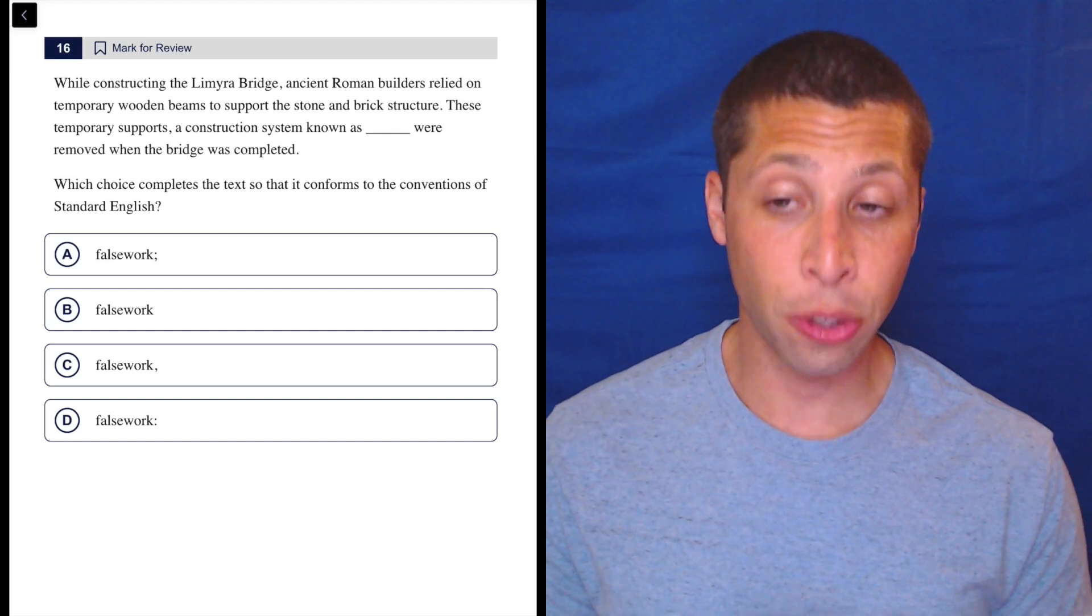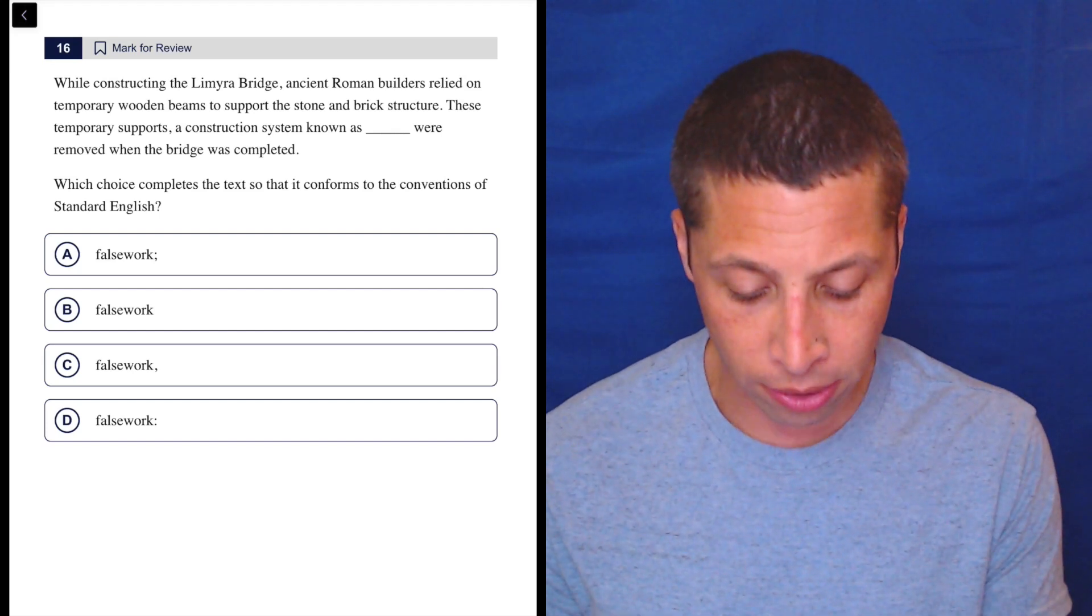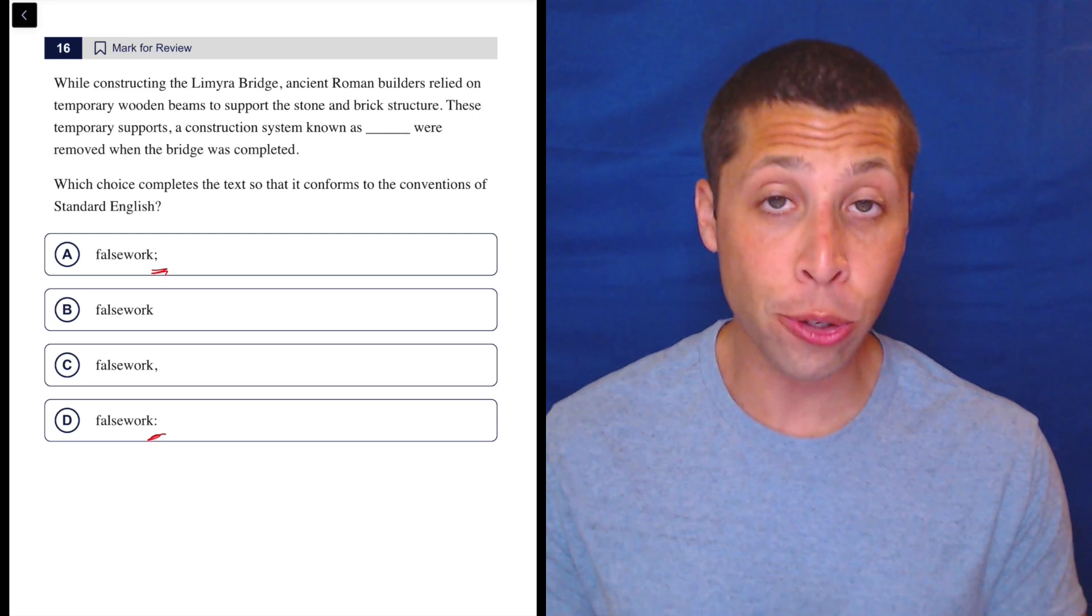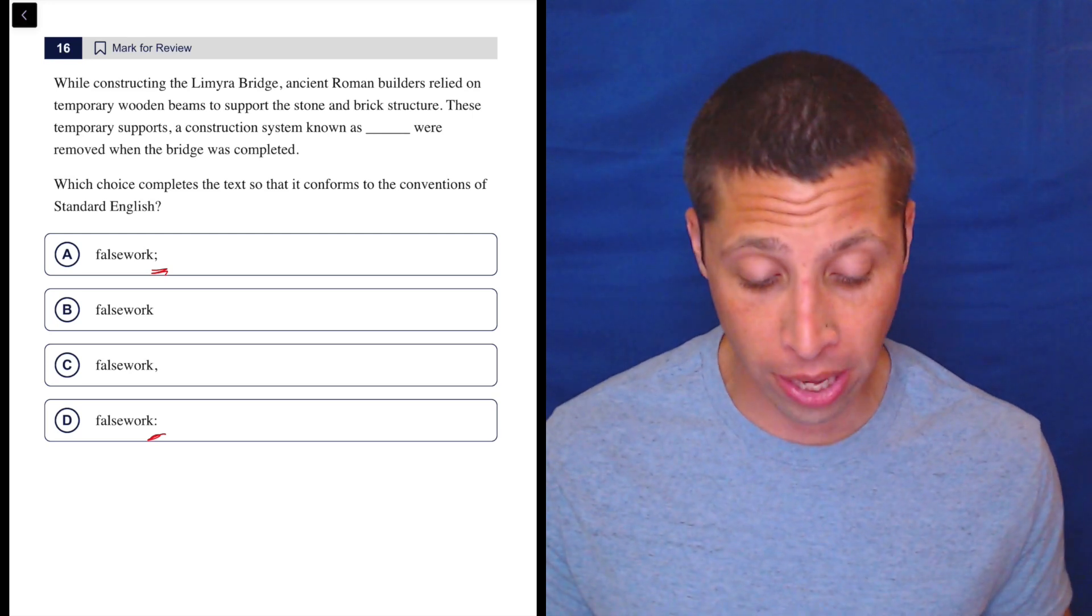This set of choices has two things that really stand out to me. I've got a semicolon in choice A, a colon in choice D. You need to know the reasons that we use those things.